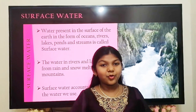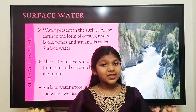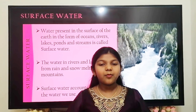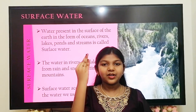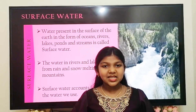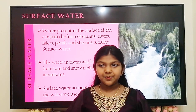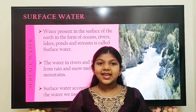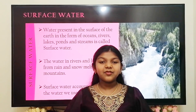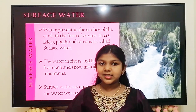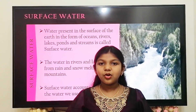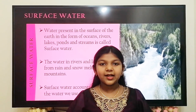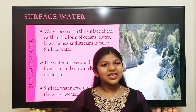Next, we are going to see about surface water. The water present on the surface of the earth in the form of oceans, lakes, rivers, streams, ponds, etc. forms the surface water. Do you know from where the rivers and lakes get water? The rivers and lakes get water from rain and the snow melting in the mountains. Surface water accounts for 80% of the water we use.